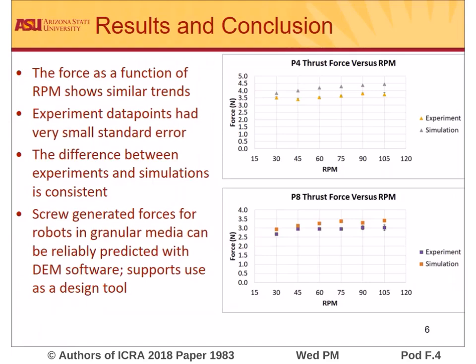The results shown have the RPM of the screw on the x-axis and the force generated on the y-axis. As you can see, the force as a function of RPM shows similar trends between experiments and simulations. The experimental data points have a very small standard error. While there is a difference between the experiment and simulation generated forces, these differences are predictable, and therefore we conclude that discrete element method modeling software is a useful tool for terra mechanics modeling.